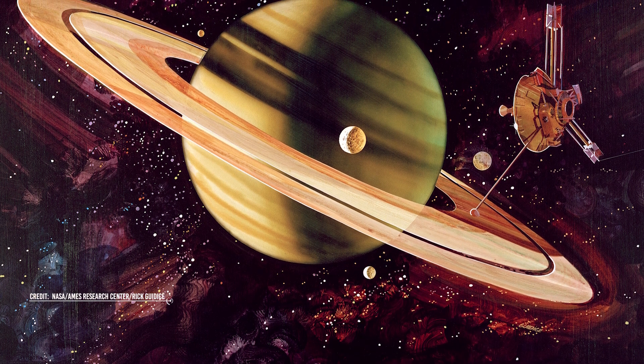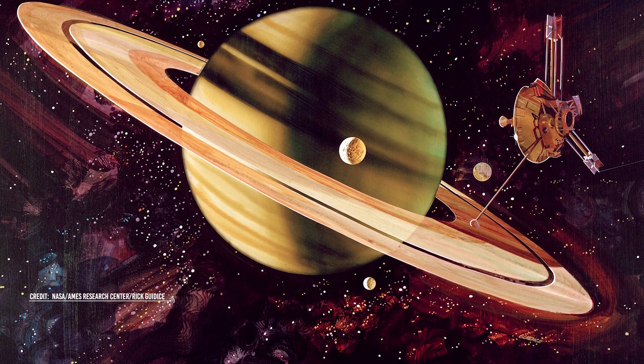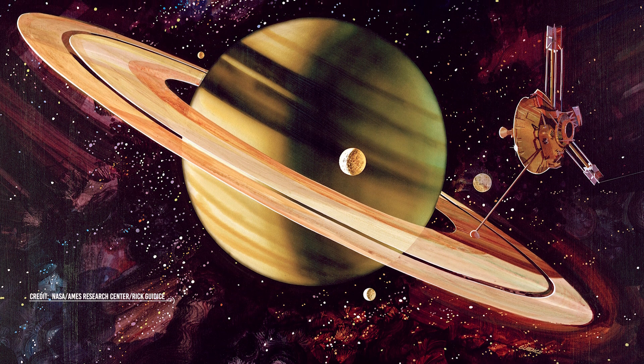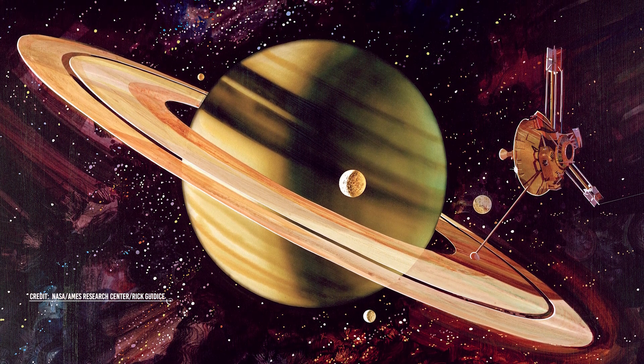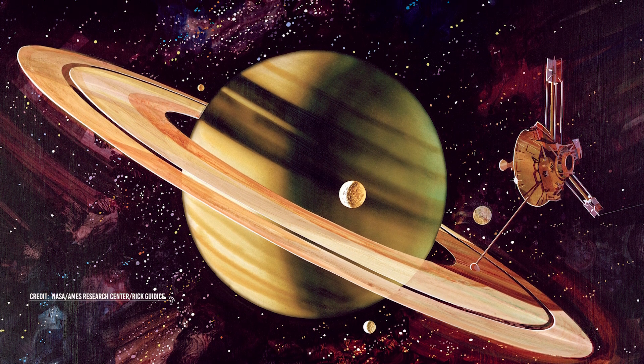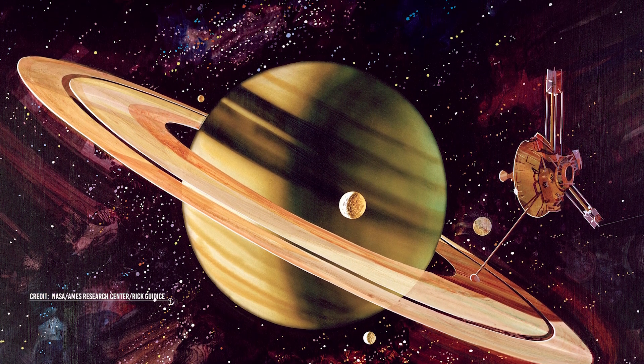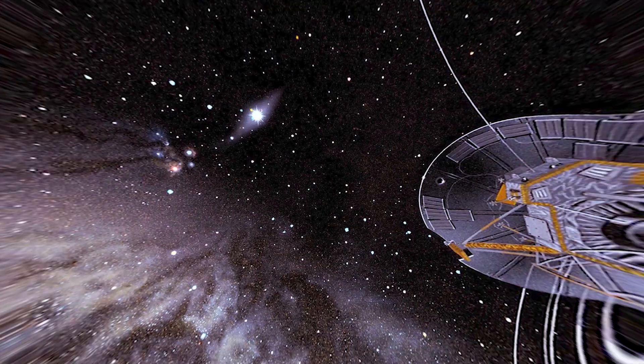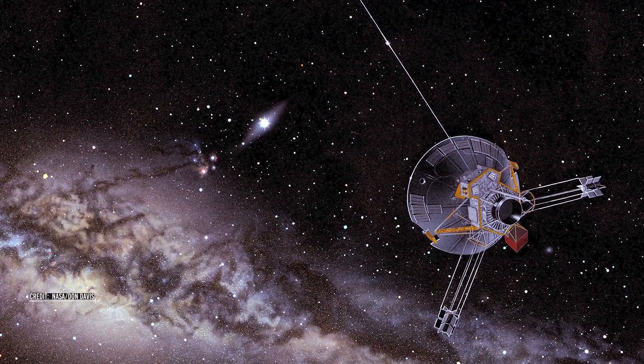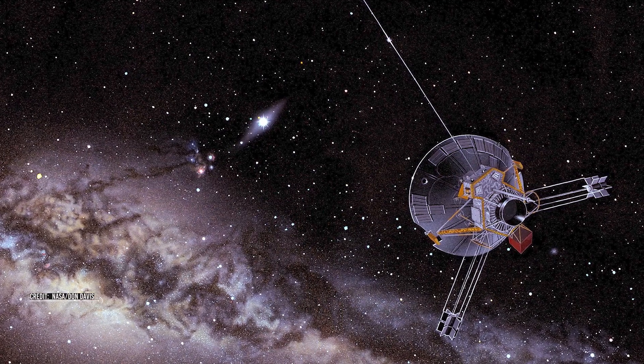Pioneer 11, like Pioneer 10, passed through Jupiter's lunar system before utilizing Jupiter's gravity as an aid maneuver to reach Saturn. It detected and almost crashed with Saturn's moon Epimetheus while investigating the Saturnian system, missing it by an estimated 4,000 kilometers. But despite encountering Saturn and Jupiter, it is our slowest outgoing spacecraft.